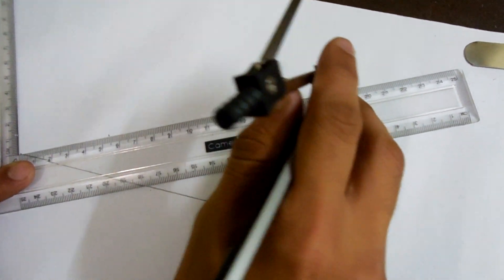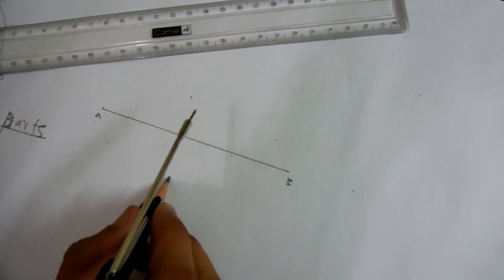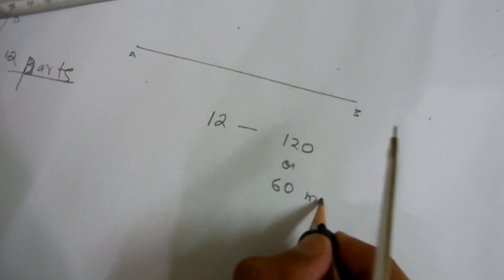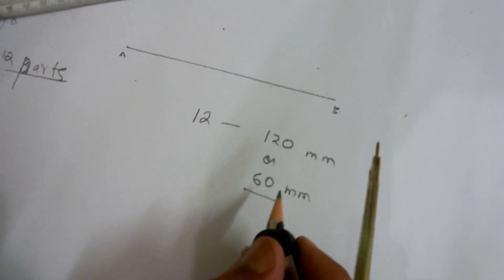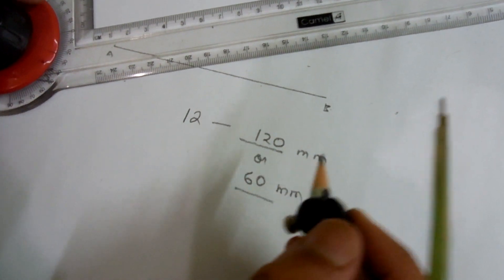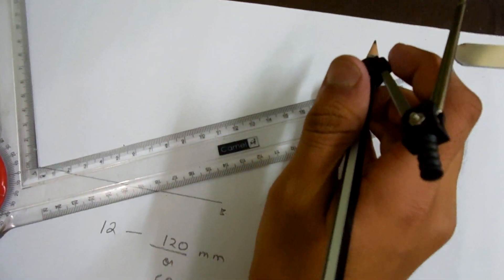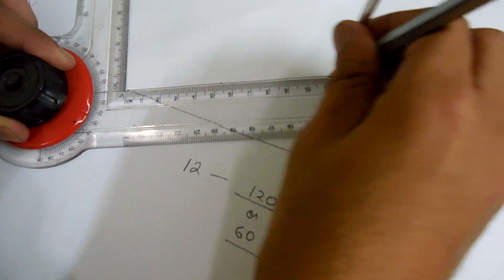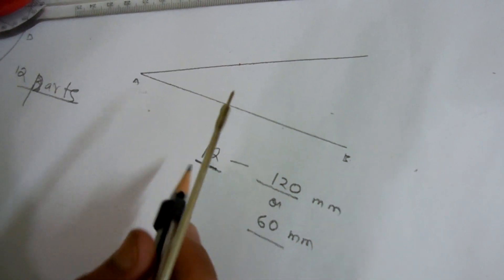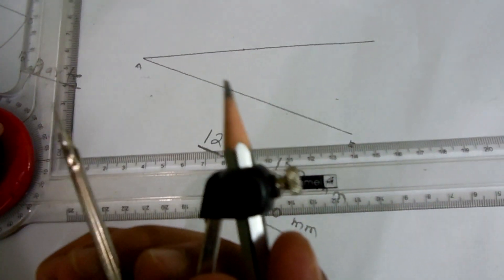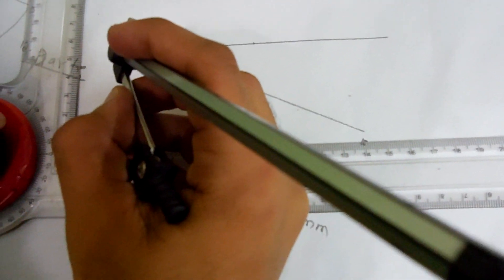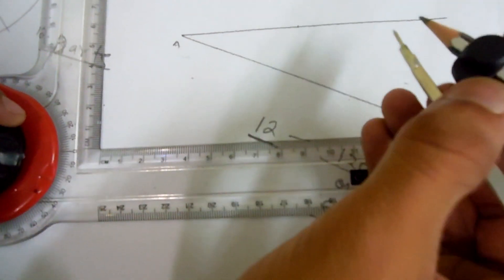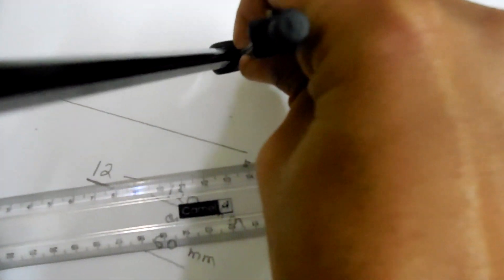If we want to divide this line in 12 parts, we are taking 120 or 60 mm. So we are taking 120 mm in 12 parts passing through A. We are dividing in 12 parts with the help of compass, taking 10 mm, cutting the line.